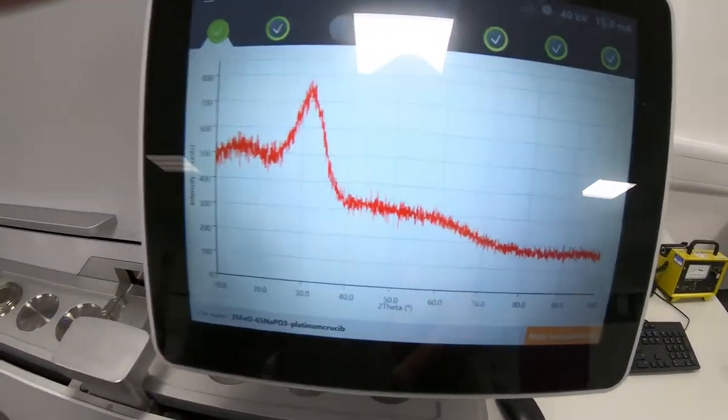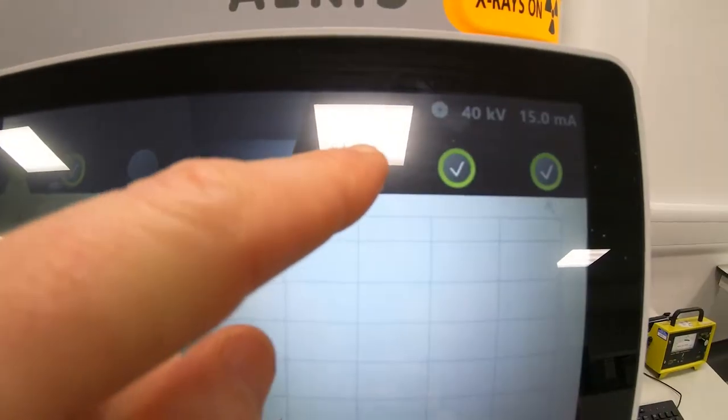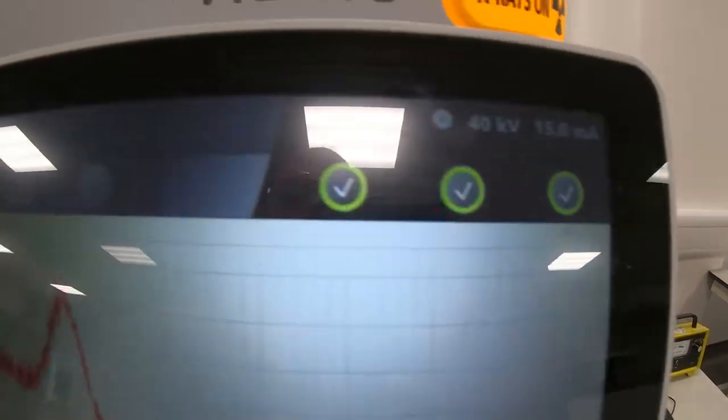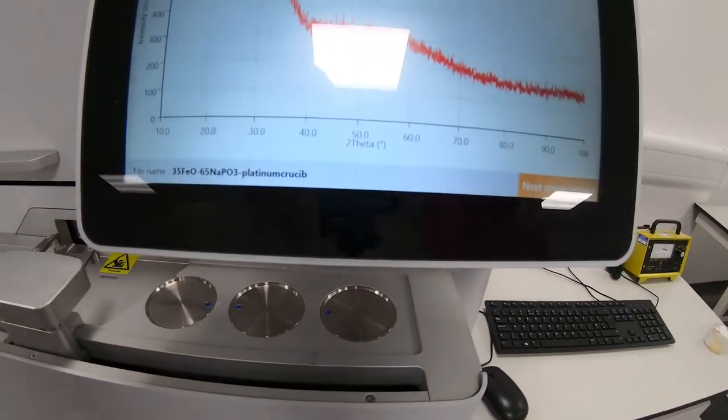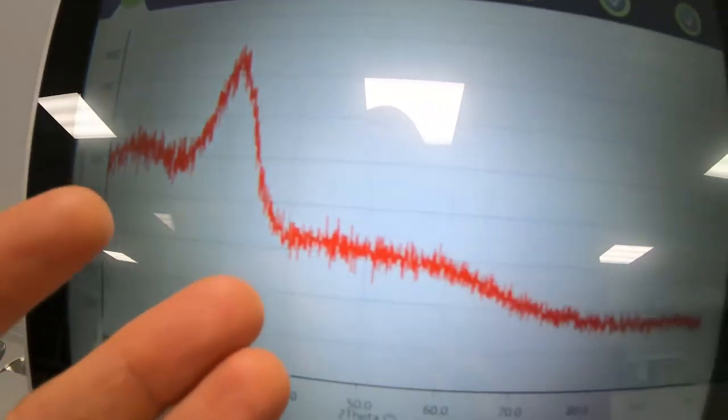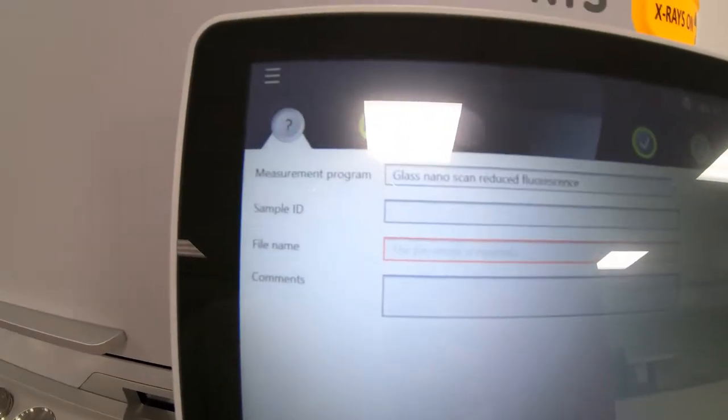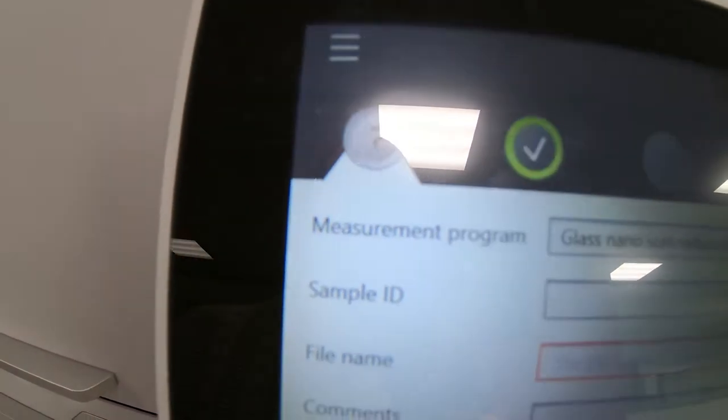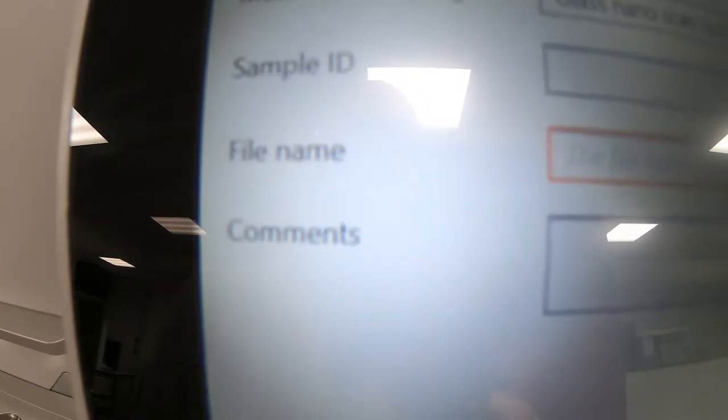So you can see on the software that there are one, two, three, four, five, six circles, and they correspond to the six sample positions that you can see. I'm on the first position, so I select the first position. This is the last experiment that was done. You can see down here it says next to measurement, so I press on that. Now this window has only a few options in it: the measurement program, the sample ID, the file name, and any comments that you might want to make.